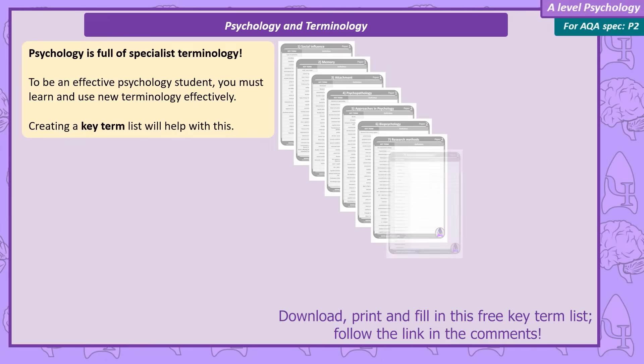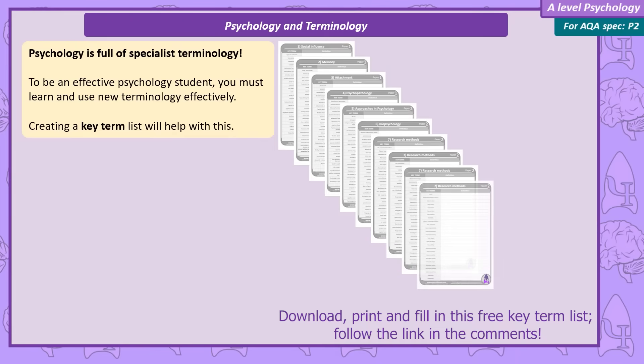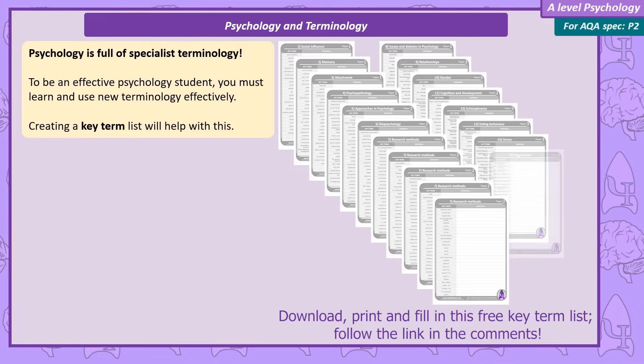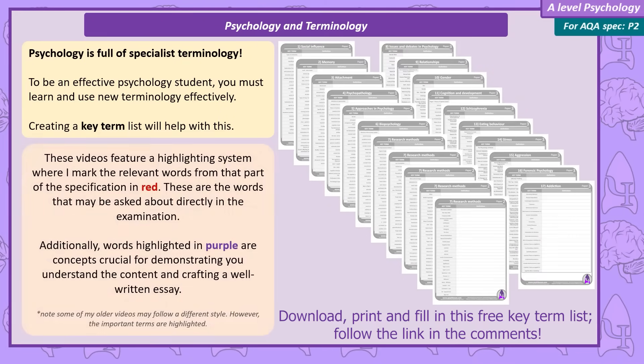So if you're just starting off with psychology, or even if you've been studying the subject for a while, it's a really good idea to have a key term list. If you hear a new word, you can always pause these videos and make a note of the definition. You'll often see keywords highlighted on the text on screen — if it's red, it's a word mentioned in the specification; if it's purple, it's a word you should know to write a good essay. I have a free key term list for each unit on my website; links to the PDFs are in the video description.